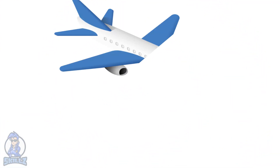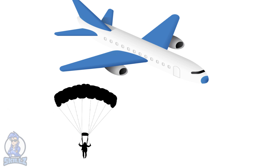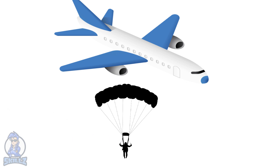If you jump out of a plane, you will accelerate until eventually reaching terminal velocity. When you open your parachute, there will be an increase in the drag force which will cause you to decelerate.